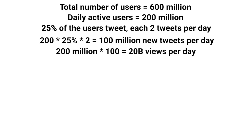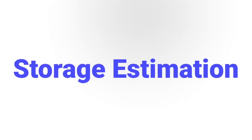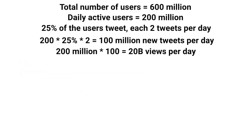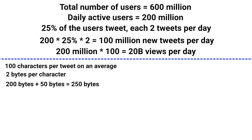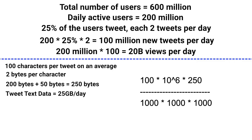Let's first estimate the storage requirement per day. For 100 million new tweets per day, we can assume 100 characters per tweet on average. If it requires 2 bytes per character, that becomes 200 bytes, plus assuming 50 bytes extra for other data like user ID, liked-by, etc., that makes 250 bytes per tweet. So: 100 million × 250 bytes = 25 GB per day. The calculation: 100 million × 250 ÷ (1000 × 1000 × 1000) = 25 GB per day.